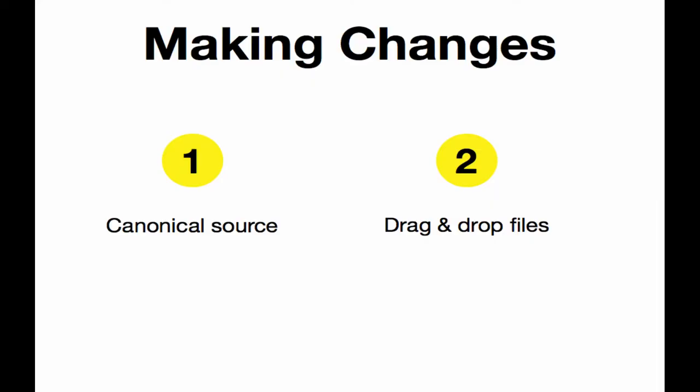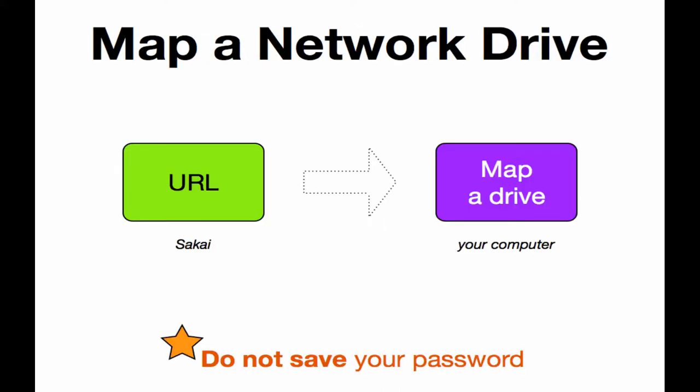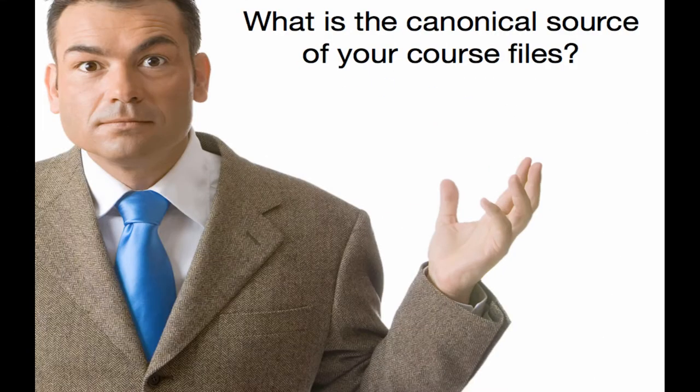So you need a canonical source of your website files, and then you just drag and drop. We already showed how to map a network drive, but the question you need to answer is, what is the canonical source? Is it a folder on your desktop, or is it the folder in Sakai?